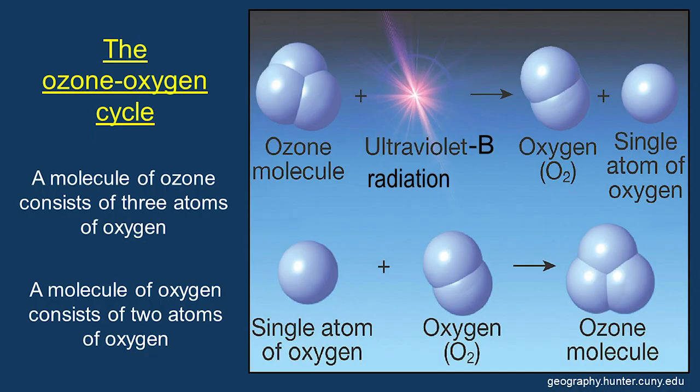When a molecule of ozone absorbs solar ultraviolet B radiation, the molecule is dissociated into a molecule of oxygen and an atom of oxygen, releasing heat. A typical molecule of ozone lasts only about 8 days on average. Thus, where there is ozone in the lower stratosphere, there is a higher than normal air temperature. The higher the concentration of ozone, the higher the surrounding air temperature.